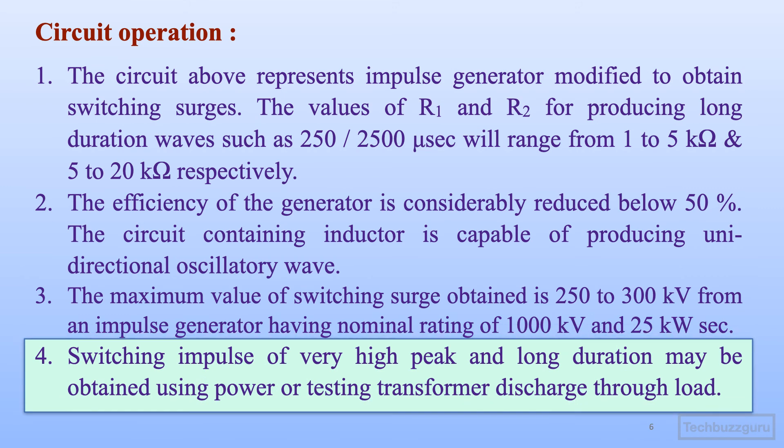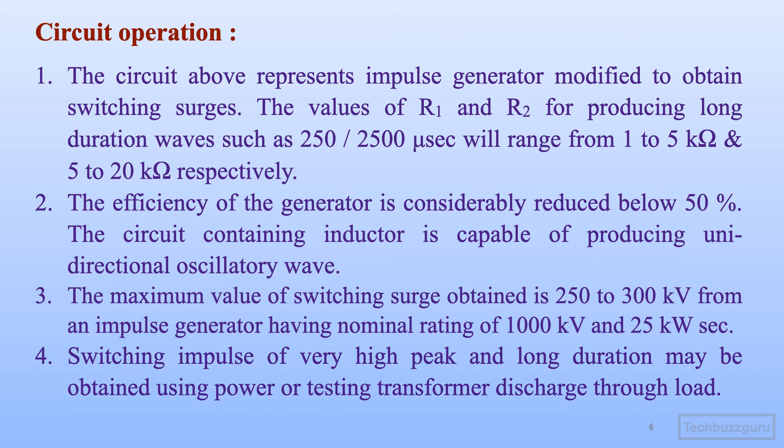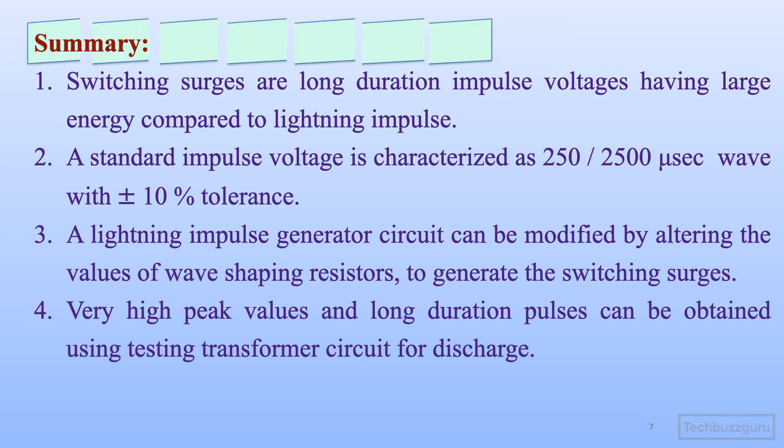The switching impulses of very high peak value and long duration may be obtained using the second configuration of method proposed earlier, that is using power transformer or testing transformer discharge through the load. So this is how the basic switching impulse generator circuit operates.